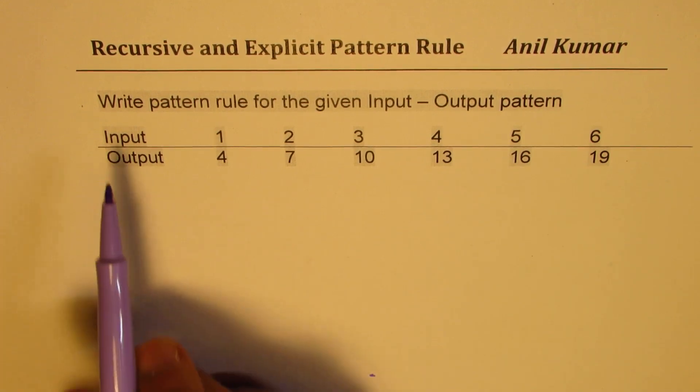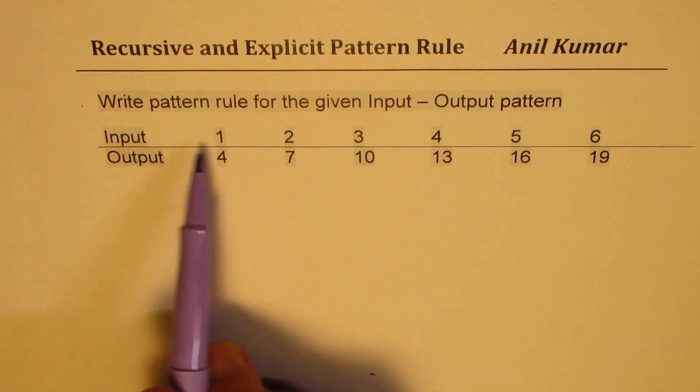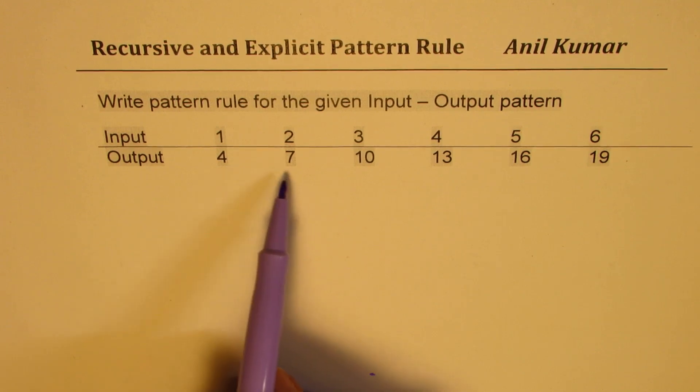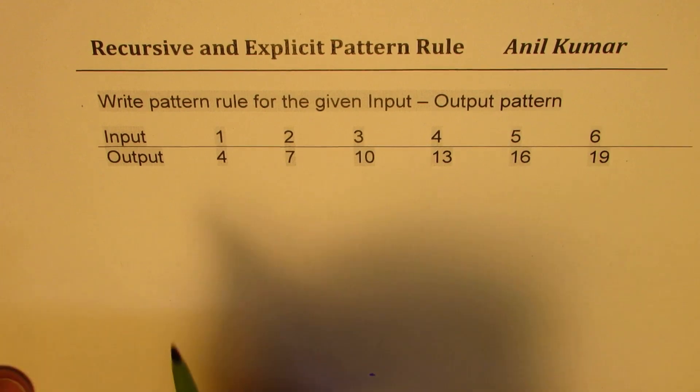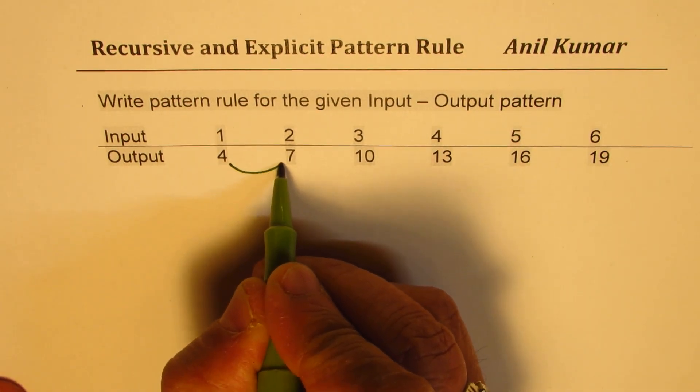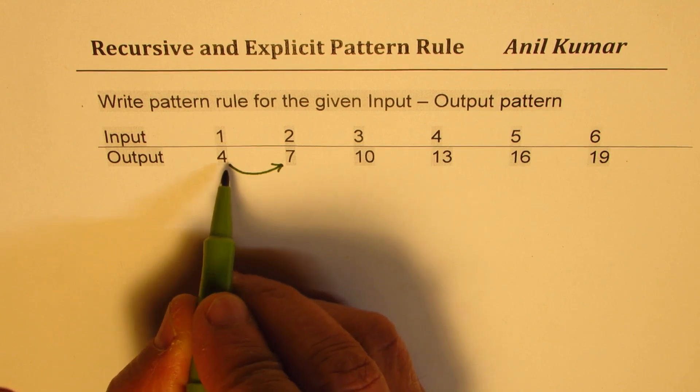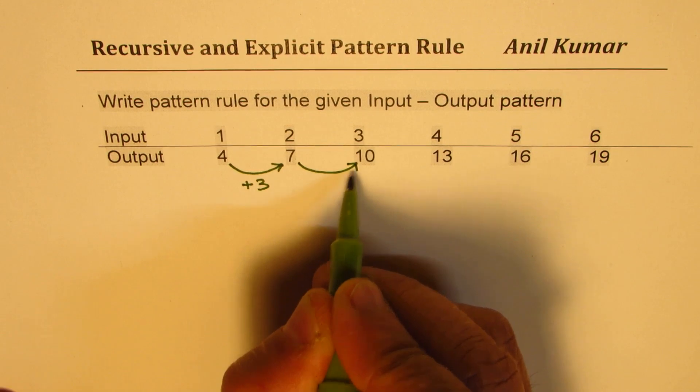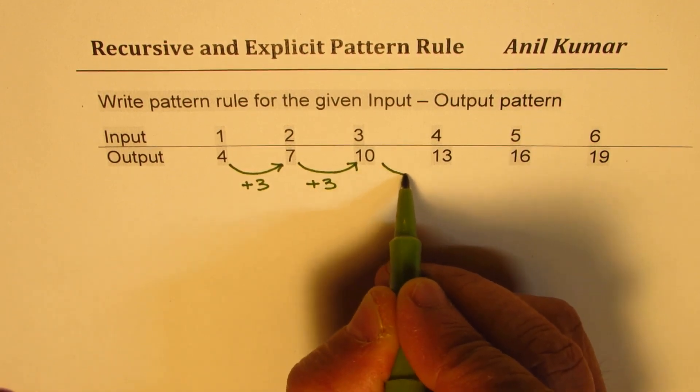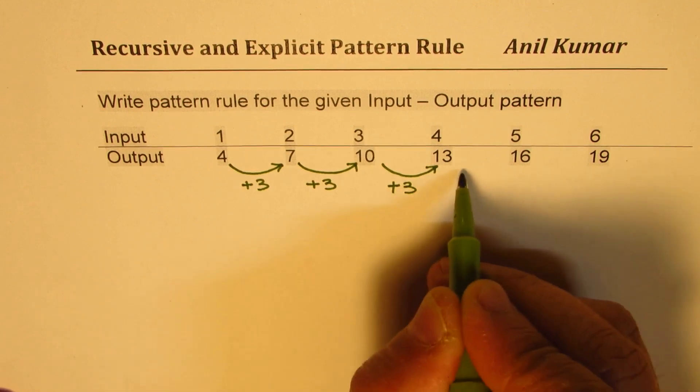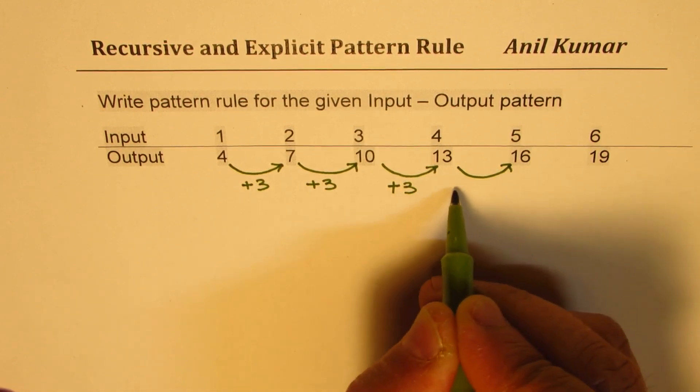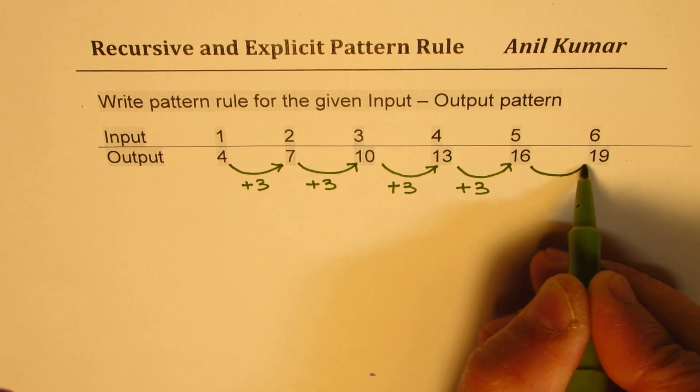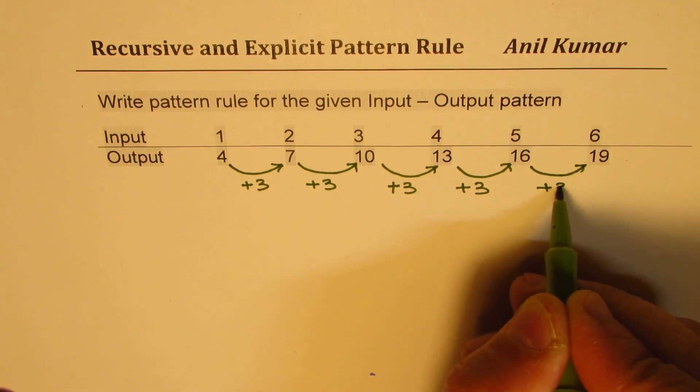Now if you analyze these inputs and outputs you see that the inputs are increasing by 1 but the outputs are increasing by 3. They start at 4 but they increase by 3. So when you go from the first to the second term, 4 plus 3 is 7 and then again plus 3 is 10, plus 3 is 13. So they are increasing by a fixed number that is 3.